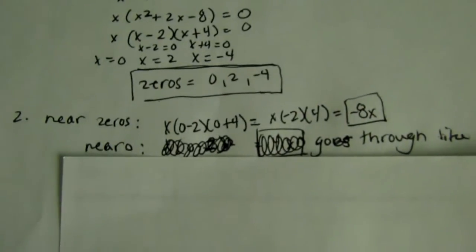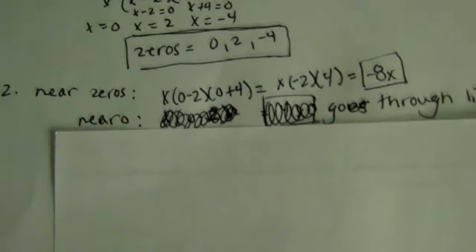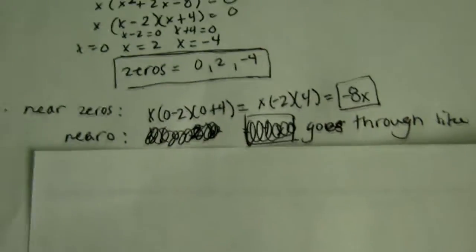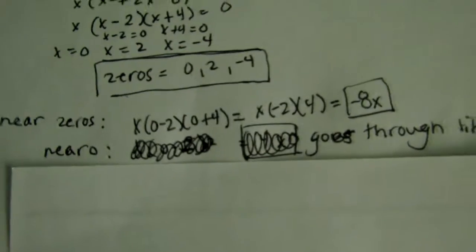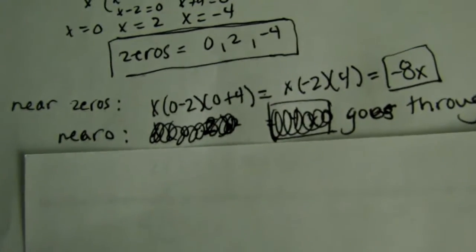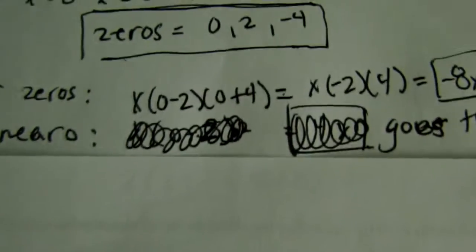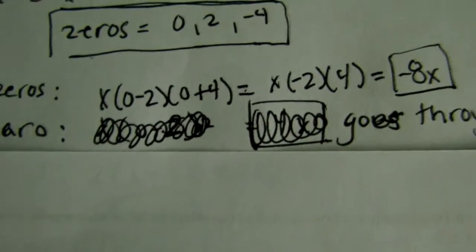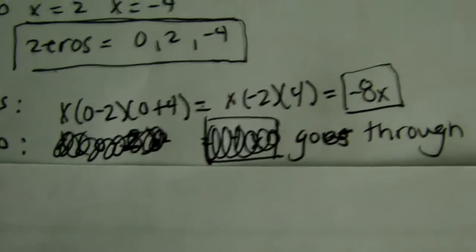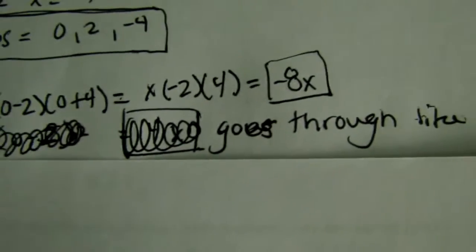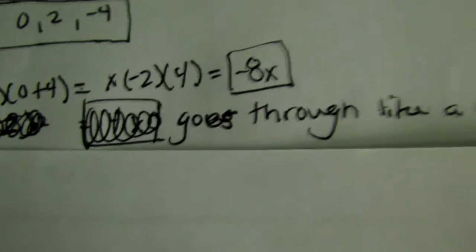To find near the zeros, set each x to zero, or if we're near zero, we want to set each x equal to zero unless x makes a zero. So, we want to do x times (0 - 2) times (0 + 4). That equals x times negative 2 times 4, and we should get negative 8x.